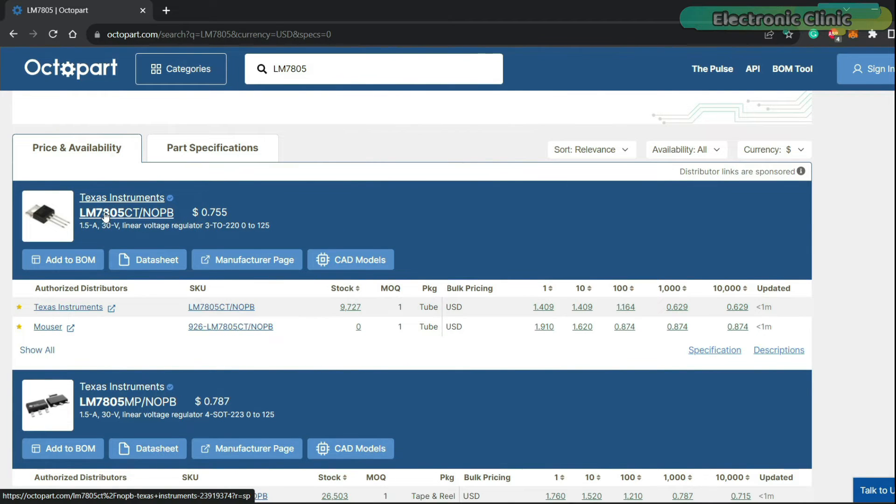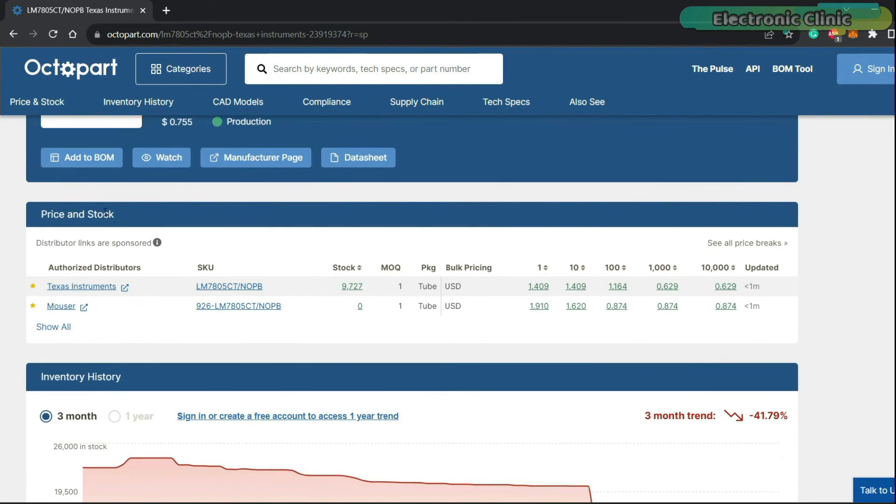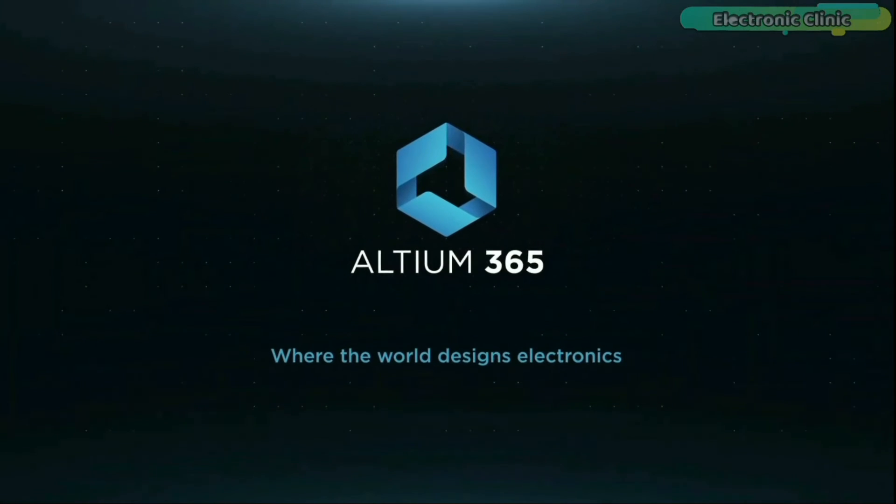Altium Designer also uses the world's fastest component search engine, Octopart, so you won't have any difficulty in searching for components. Links to Altium Designer, Altium 365 and Octopart are given in the description.